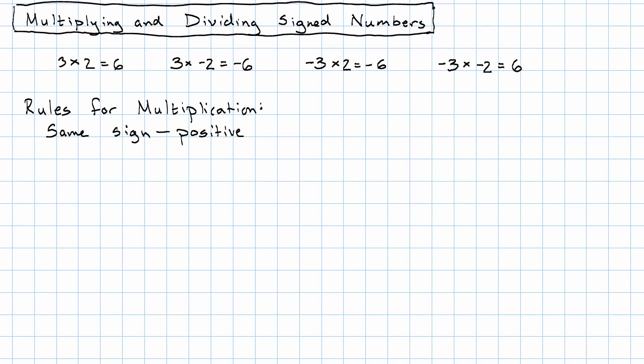If we multiply two numbers with the same sign, the result is positive. Same sign, I mean both positive or both negative. If we multiply two numbers with opposite signs, the result is negative. Other than that, we just multiply the absolute values. So those are the rules for multiplication.